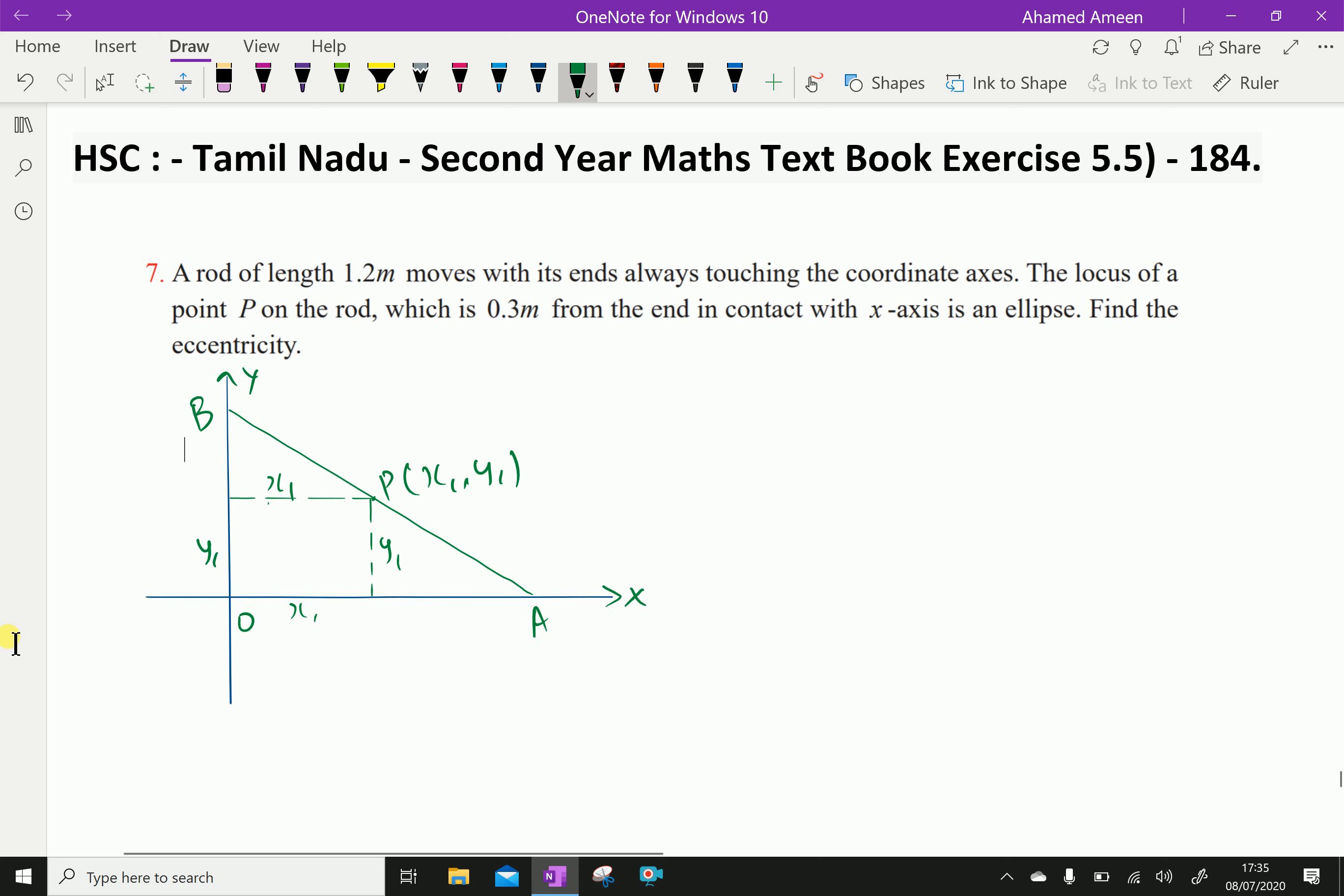Now, this rod of length 1.2 meter moves with its ends always touching the coordinate axes. The locus of point P on the rod, which is 0.3 meter from the end in contact with x-axis is an ellipse. The point P is (x₁, y₁).